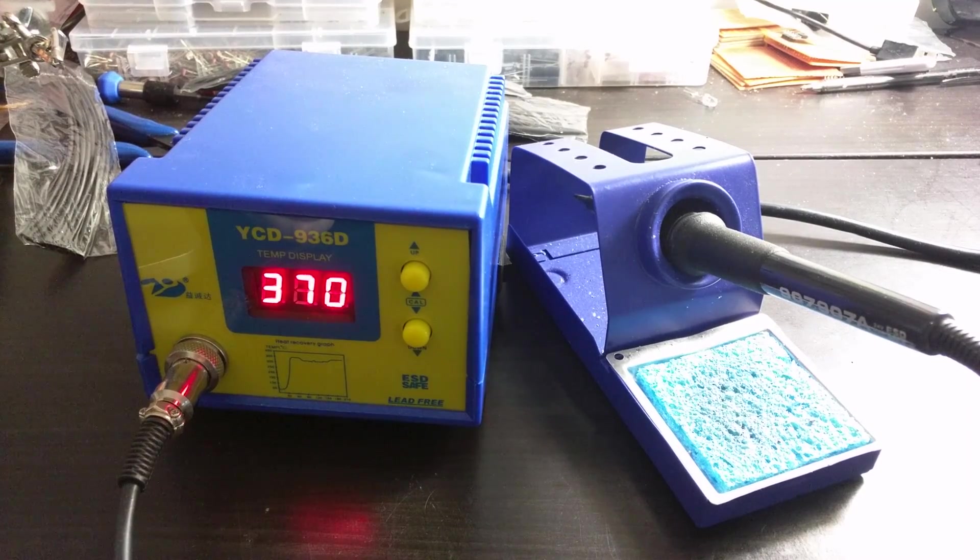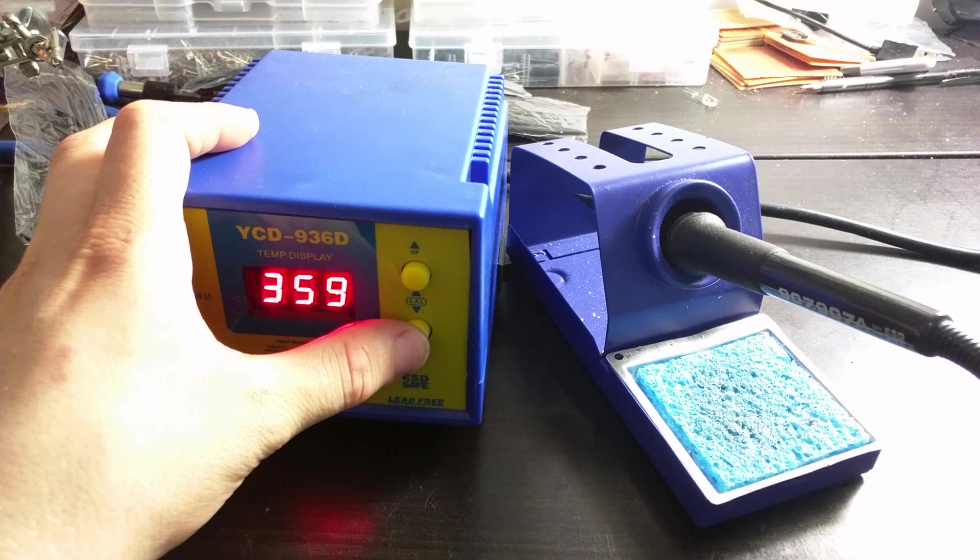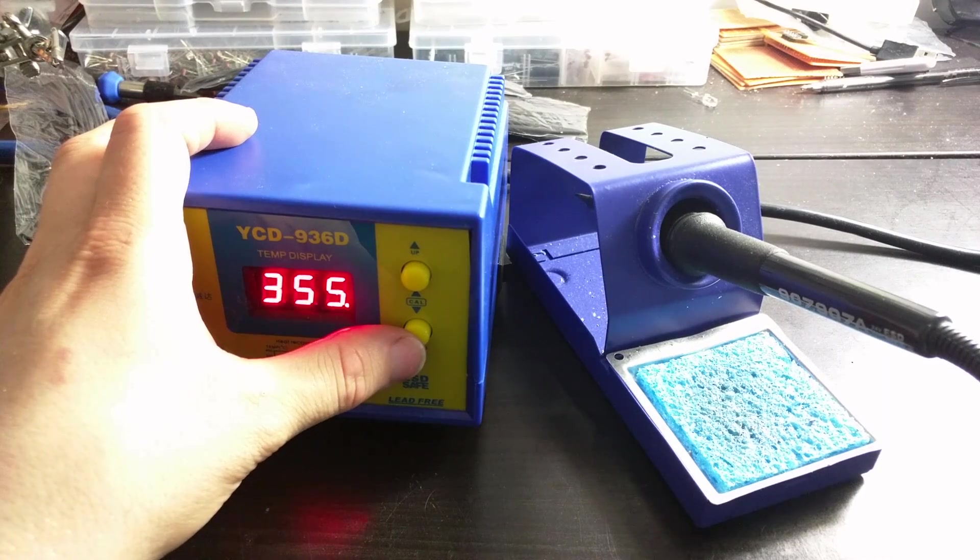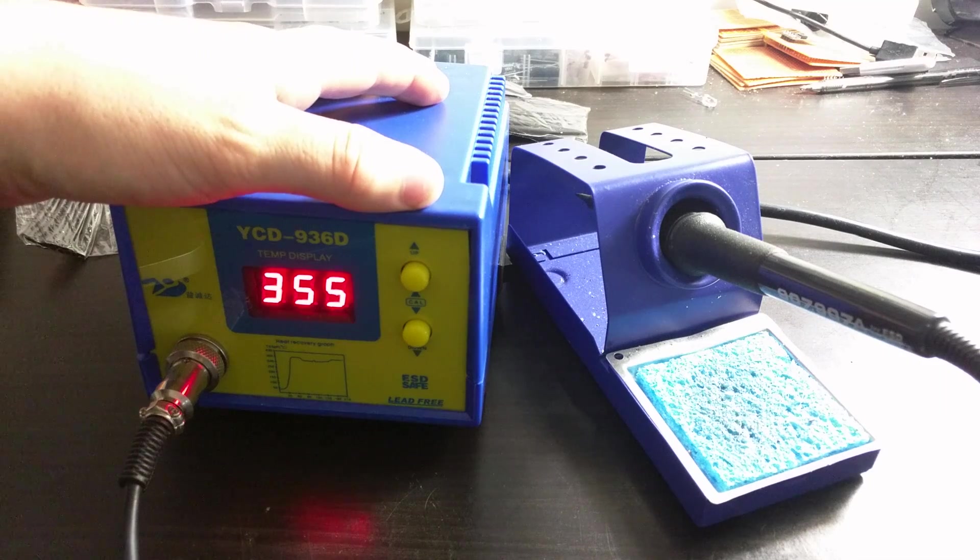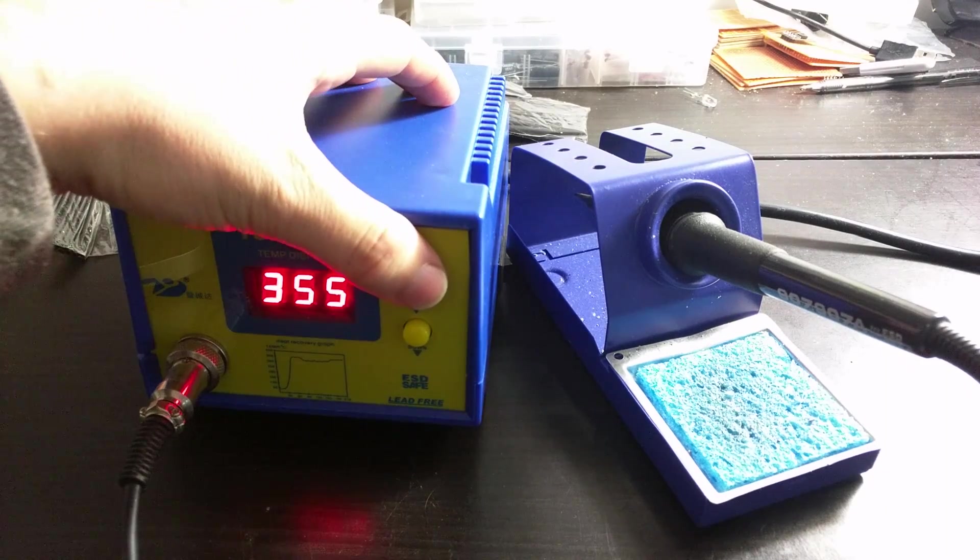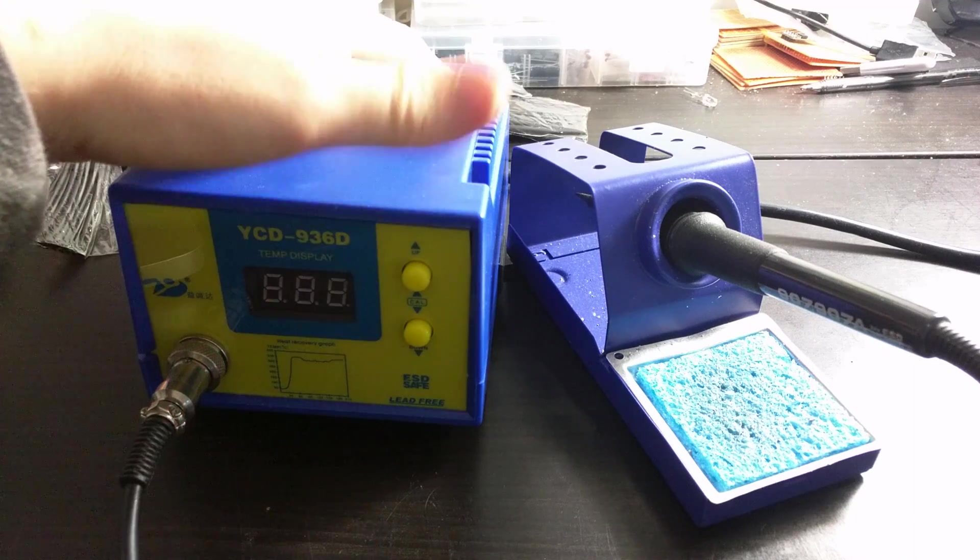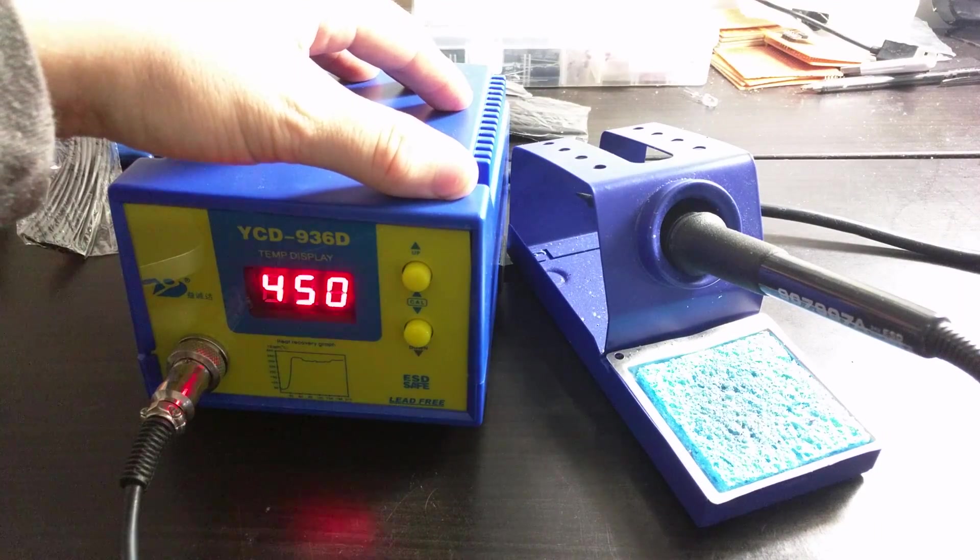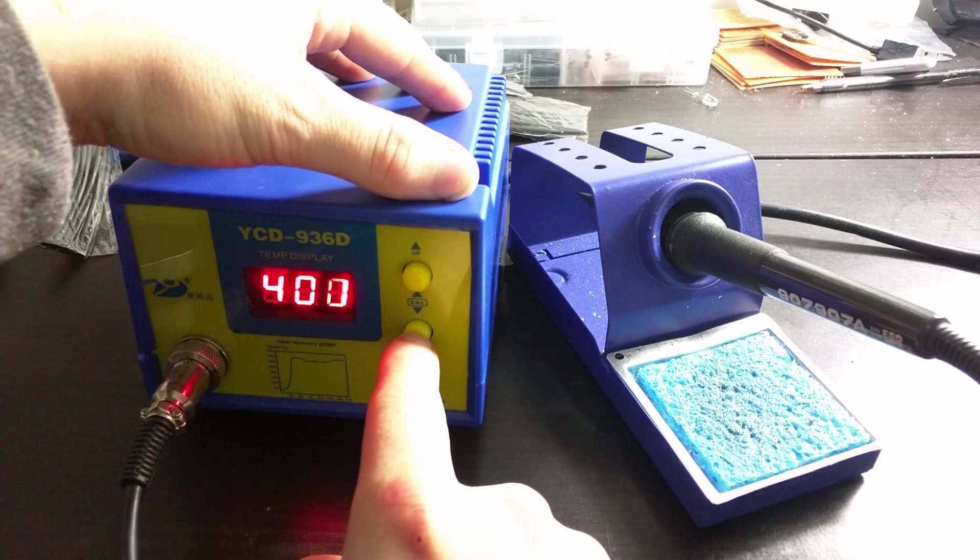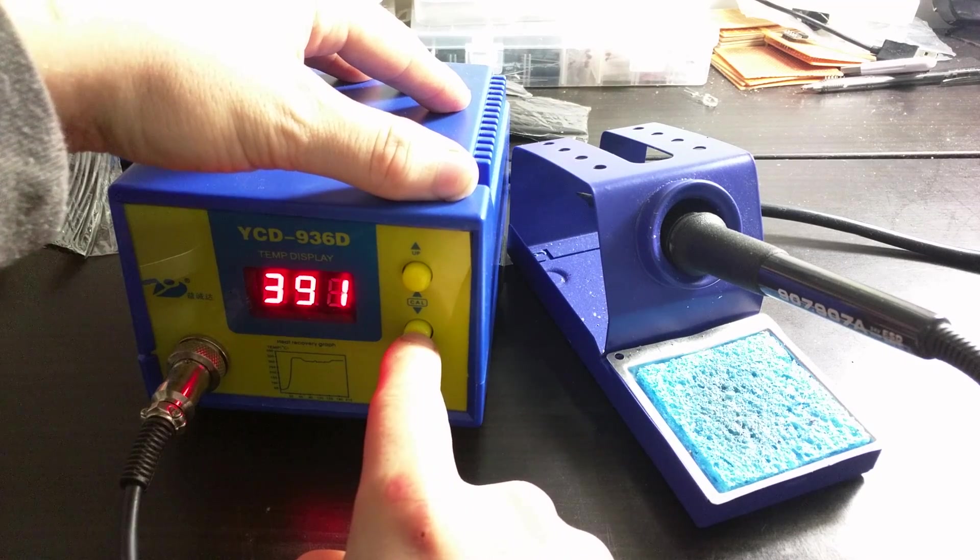If I'm soldering sensitive components, I really want to take the heat from the soldering iron down to the minimum possible. But when I'm soldering larger connections and less sensitive components, I might want to ramp the temperature right up to 450 degrees Celsius. For most applications, I like to set my iron to about 380 degrees.